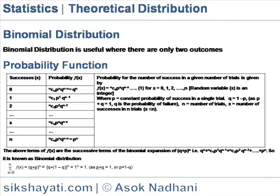Σf(x), where x = 0 to n = (q+p)^n = (q+1-q)^n = 1^n = 1, as p + q = 1. So, p = 1 - q.